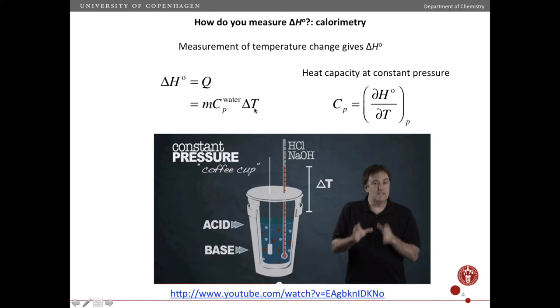So then we translate the change in temperature, which we measure, to delta H. The heat capacity then has to be the change in enthalpy as a function of temperature. And so since enthalpy is related to pressure, this is the heat capacity at constant pressure.